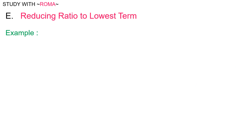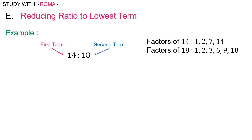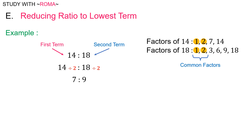Another example: fourteen is to eighteen. The factors of fourteen are one, two, seven, and fourteen. The factors of eighteen are one, two, three, six, nine, and eighteen. Aside from one, fourteen and eighteen share a common factor, which is two. In order to reduce to lowest term, divide both terms by two. So fourteen divided by two is to eighteen divided by two, which is equal to seven is to nine.